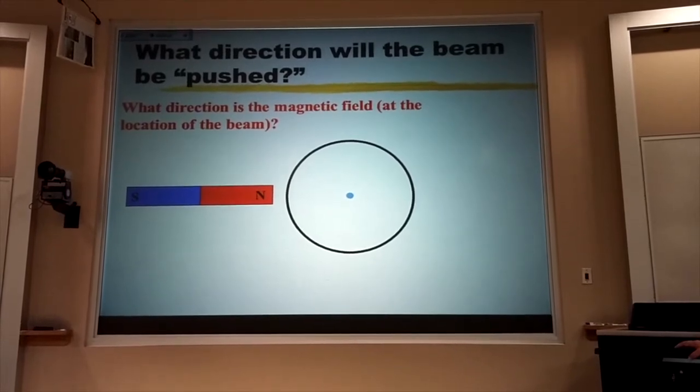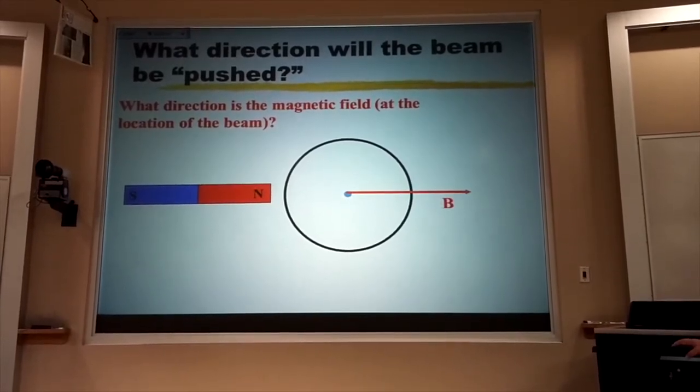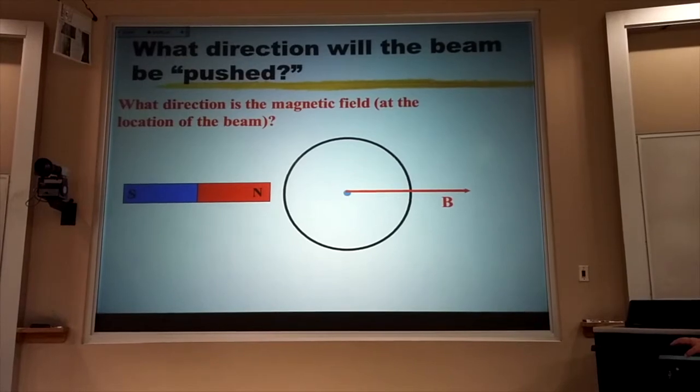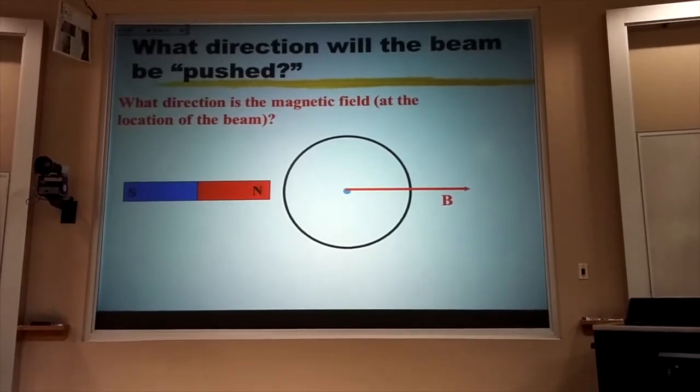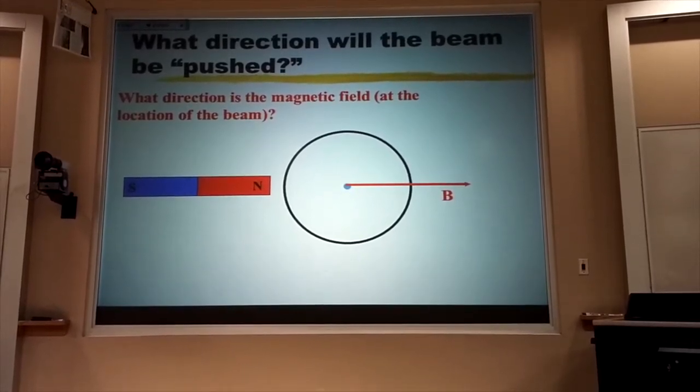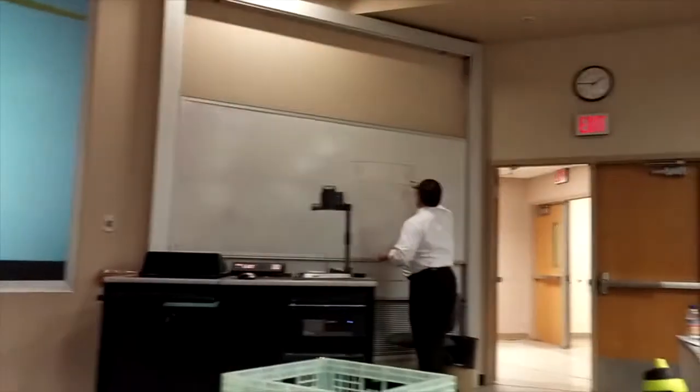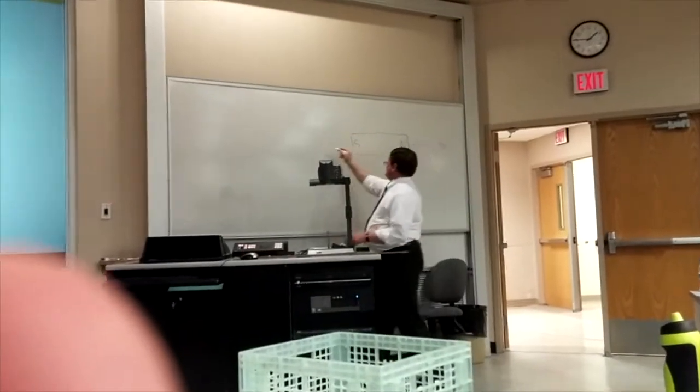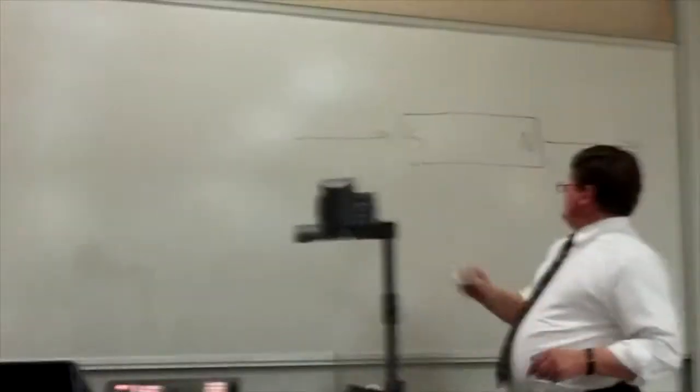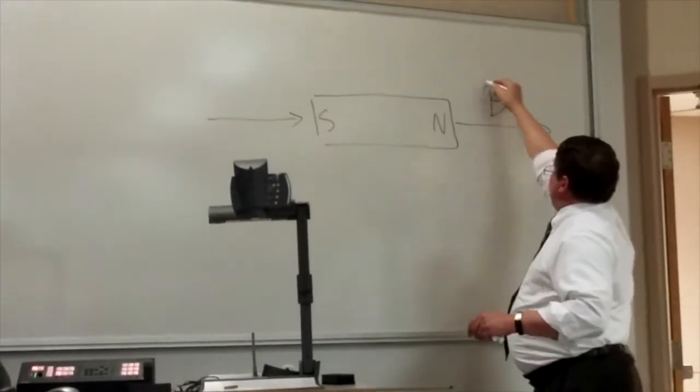Remember, it comes out of the north and goes into a south. That's pretty much all you need to remember with bar magnets, is that if you're near the north pole, it's away. If you're near the south pole, it's towards. And I'm drawing the magnetic field.